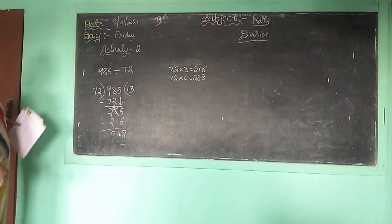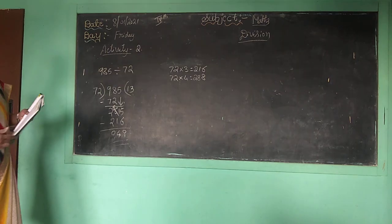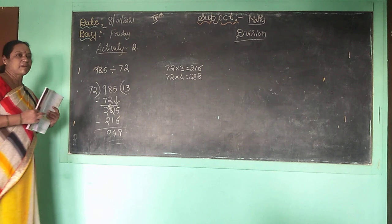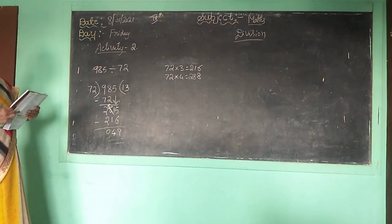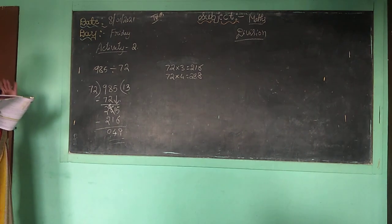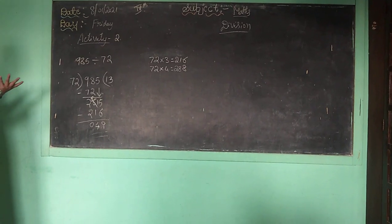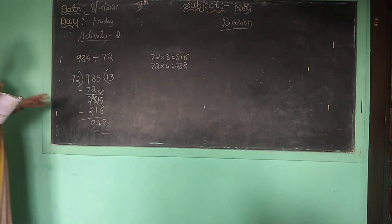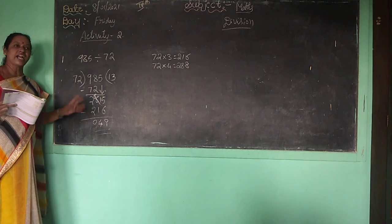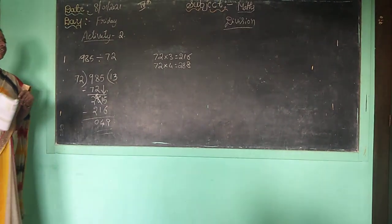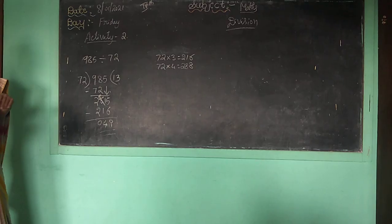This is what we have to do. Next class I will continue with divisions by 10, 100, and 1000, and verify. You have to find the quotient, remainder, and verify your answer. Next class I will continue. Thank you children.